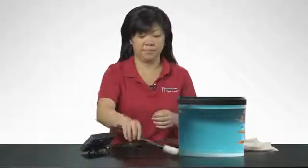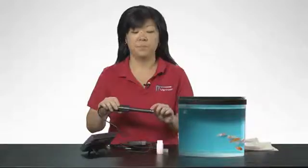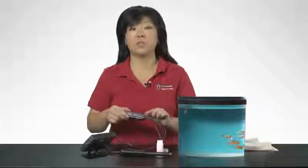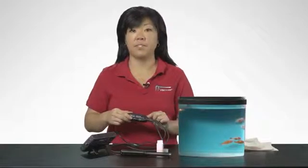The optical DO probe has a built-in thermistor for automatic temperature compensation. Be sure to keep this metal dot submerged for the temperature compensation to work. A built-in barometer is used for pressure compensation. These features eliminate the need to recalibrate the probe at different temperatures and elevations.